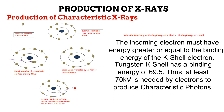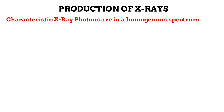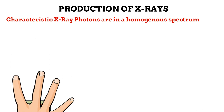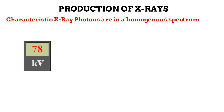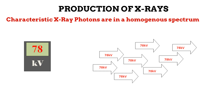Unlike in Bremsstrahlung photon production, multiple interactions do not occur in characteristic X-ray production. This means that characteristic X-ray photon production gives off a homogeneous spectrum. If a radiographer uses a kilovoltage of 78, the characteristic X-ray photons in the beam produced will all possess an energy of 78 kilovolts. This is why they bear the name characteristic X-ray photons — the energy they possess is a characteristic of the kilovoltage selected by the radiographer. They represent the energy of the incoming electrons.